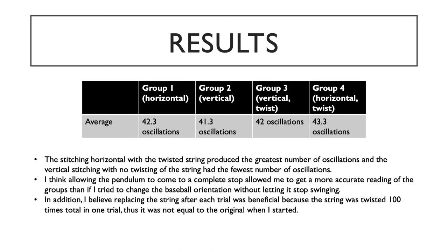My results showed that the baseball with the horizontal stitching and the twisted string produced the greatest number of oscillations, and the baseball with vertical stitching and no twisting of the string produced the fewest. One thing that was beneficial was allowing the pendulum to come to a complete stop before changing out the baseball and its orientation, because it would have continued spinning if I did not. Another beneficial practice was replacing the string after group four of each trial because of how many times the string was twisted, which ended up compromising some of the string.